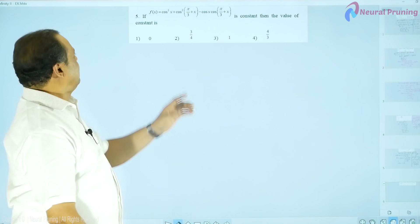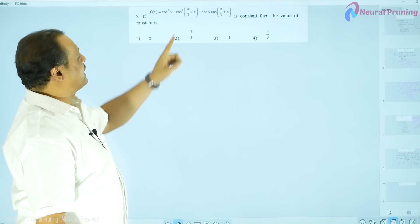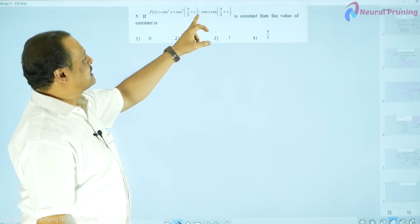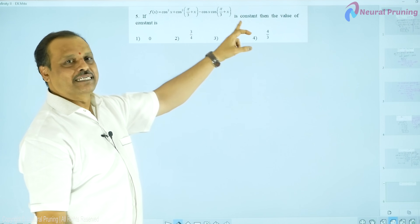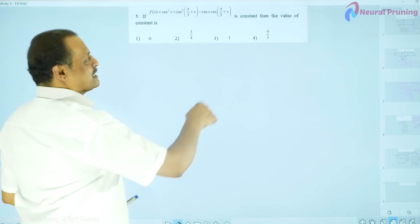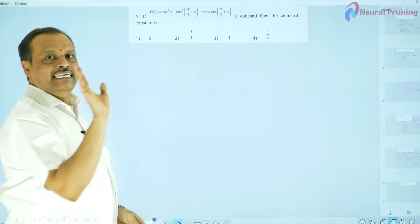I have one more example. f of x is equal to cos square x plus cos square of pi by 3 plus x minus cos x into cos of pi by 3 plus x. So what is given? It is a constant, then the value of constant is.